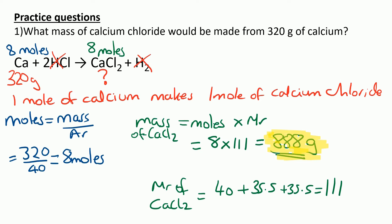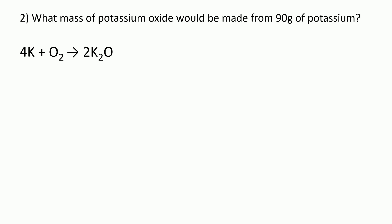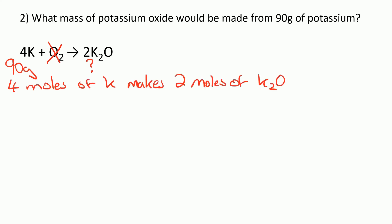Question 2: what mass of potassium oxide would be made from 90 grams of potassium? Pause the video and then check back in when you've had a go. First we annotate the equation — 90 grams of potassium, we want to know about potassium oxide, and we can ignore the oxygen. We write a sentence: in this case it's not an equal ratio — 4 moles of K makes 2 moles of K2O. So if we had 10 moles of K, it would be 5 moles of K2O — we're halving it.